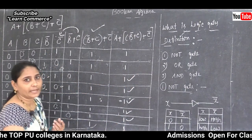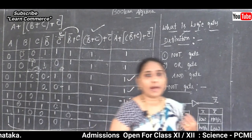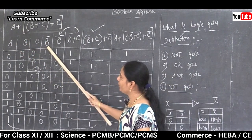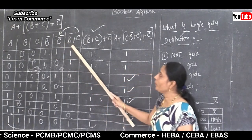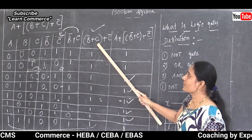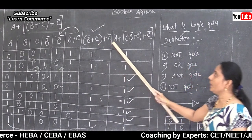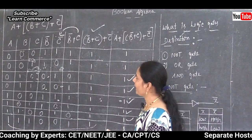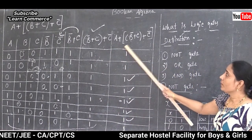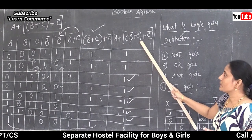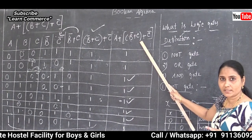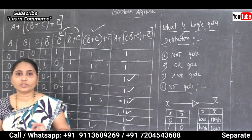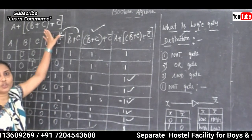So, we calculate the value of the Boolean expression A plus (complement B plus C) plus complement C step by step: columns A, B, C, complement B, complement C, (complement B plus C), and (complement B plus C plus complement C). Finally we get the answer for the whole Boolean expression.